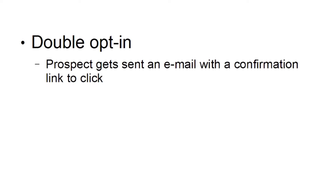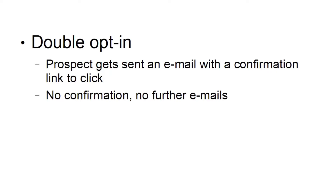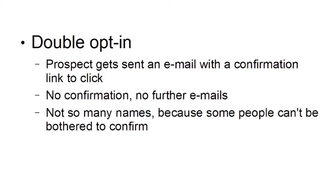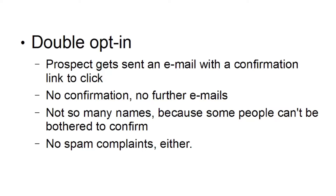These days, double opt-in is pretty much the default setting. With double opt-in, the prospect gets sent an email with a confirmation link to click. If they don't confirm, there are no further emails. You don't get quite so many names, but you don't get any spam complaints either, because you know it's a genuine address and the person has confirmed. If they complain, you can look it up and see when they signed up and confirmed, so you can prove it's not spam.